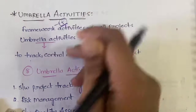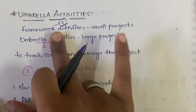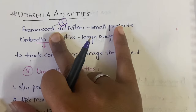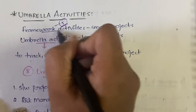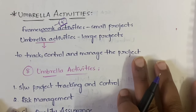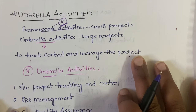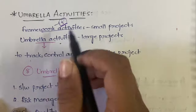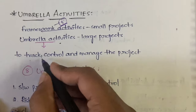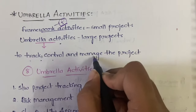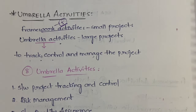We have learned that the five framework activities are best suitable for small projects. In the case of large projects, those five framework activities may not be applicable. In that case, you need to follow the umbrella activities — there are eight of them — in order to track, control, and manage the project.